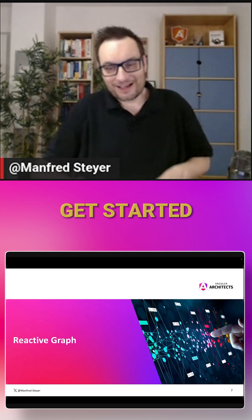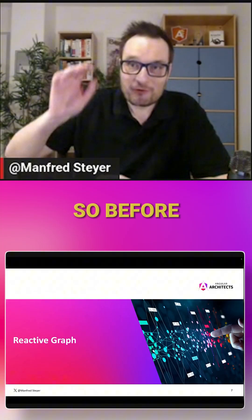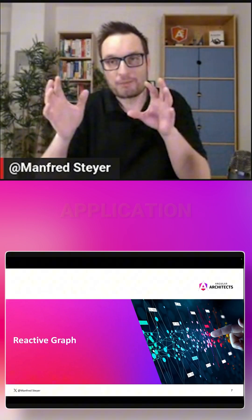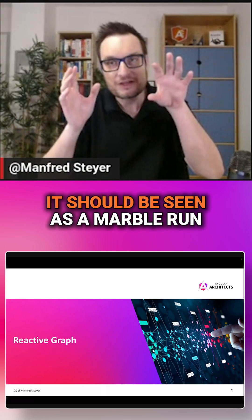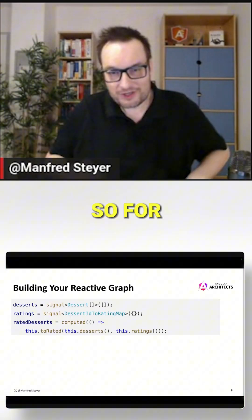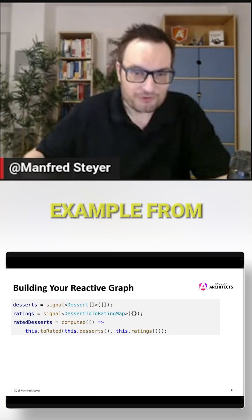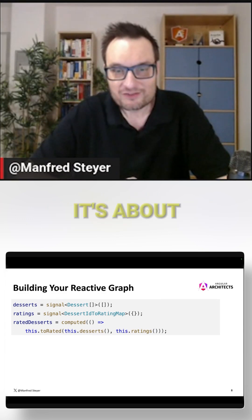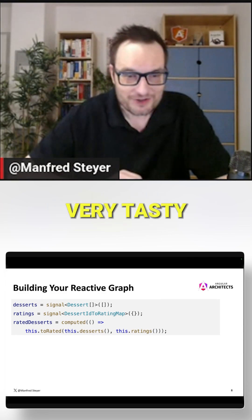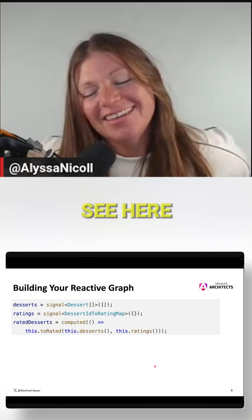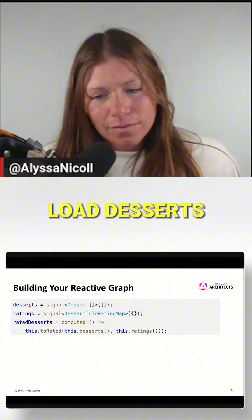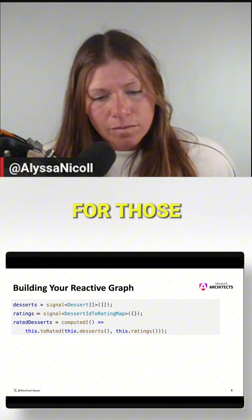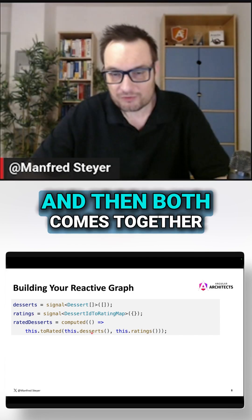Let's get started with the reactive graph. Before, I told you we need to adjust our thinking about our application — it should be seen as a marble run. I have a little example from another demonstration application about desserts, a very tasty application. You can see here I can load desserts, they are put into a signal, and I can load ratings for those desserts.